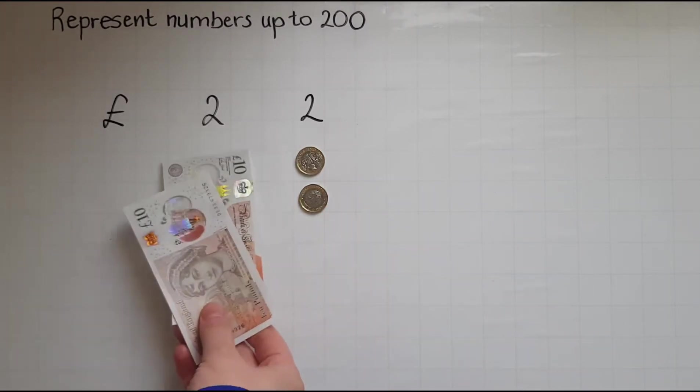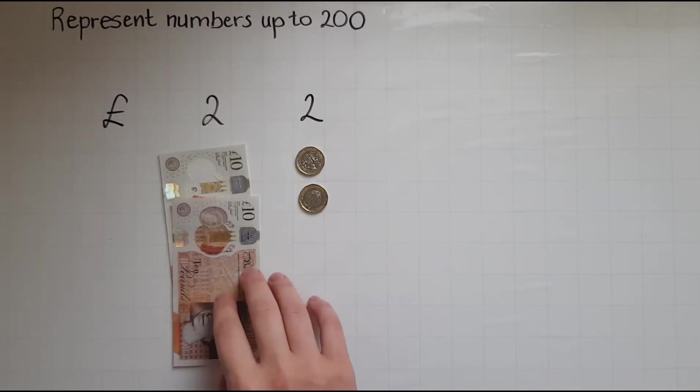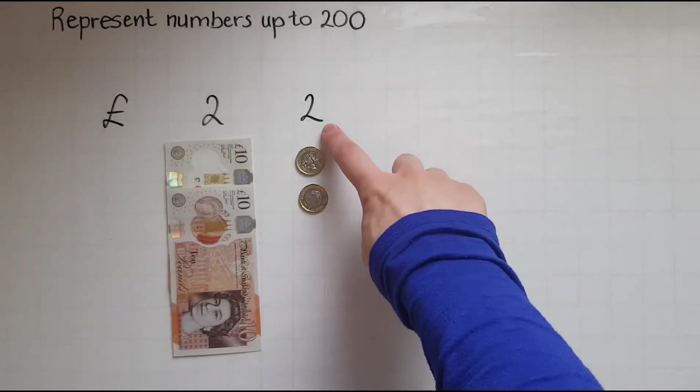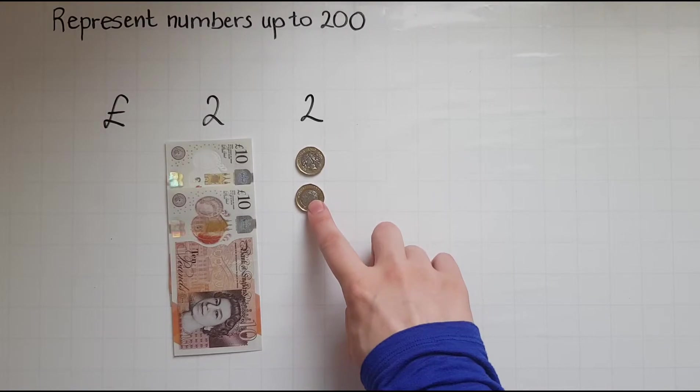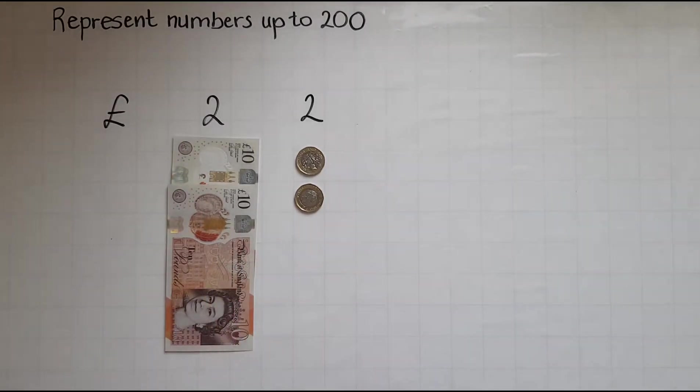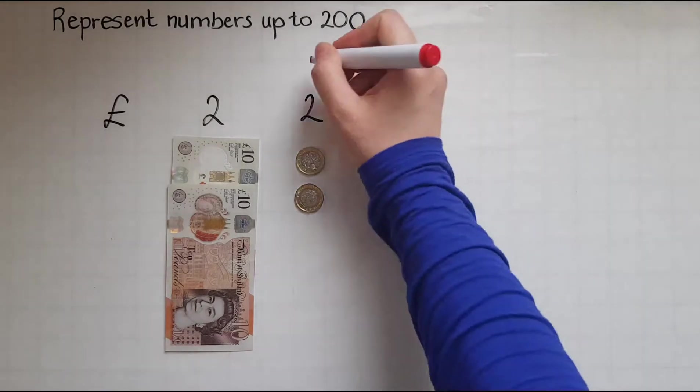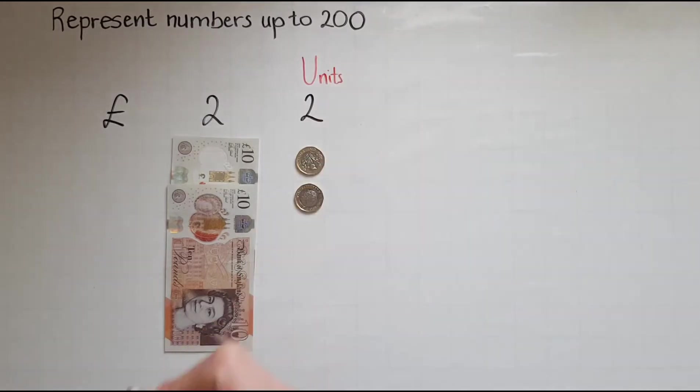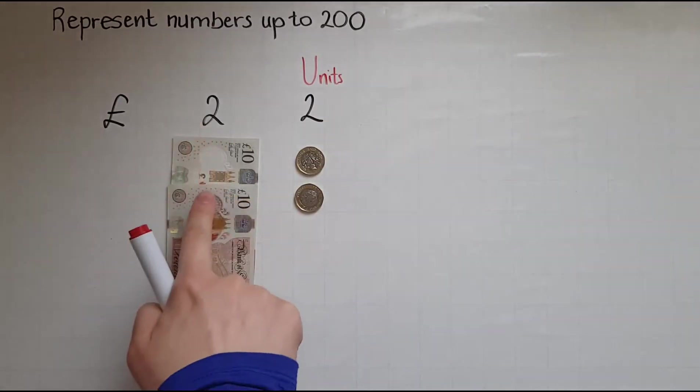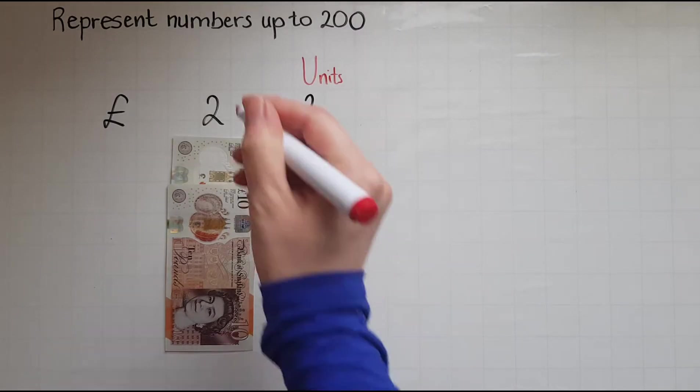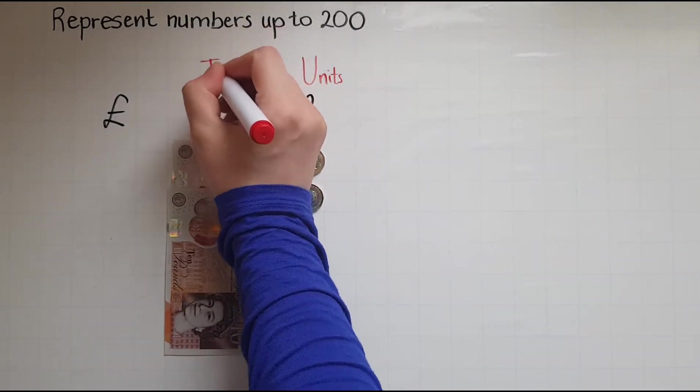So there is 10 and another 10 to make 20. So this is representing the single pound coins, or as we call them, the units. And this is representing the tens of pounds. We call that the tens.